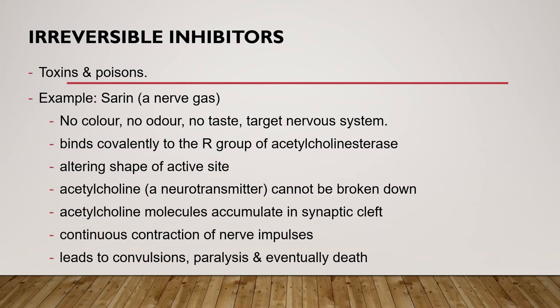You have learned that enzyme inhibition can be either reversible or irreversible. Now let's take a look at irreversible inhibitors. Toxins and poisons are often irreversible enzyme inhibitors. An example is sarin, or nerve gas. Sarin has no color, no odor, and no taste — so you cannot know if it is nearby. You cannot see it, smell it, or taste it. It targets the nervous system.